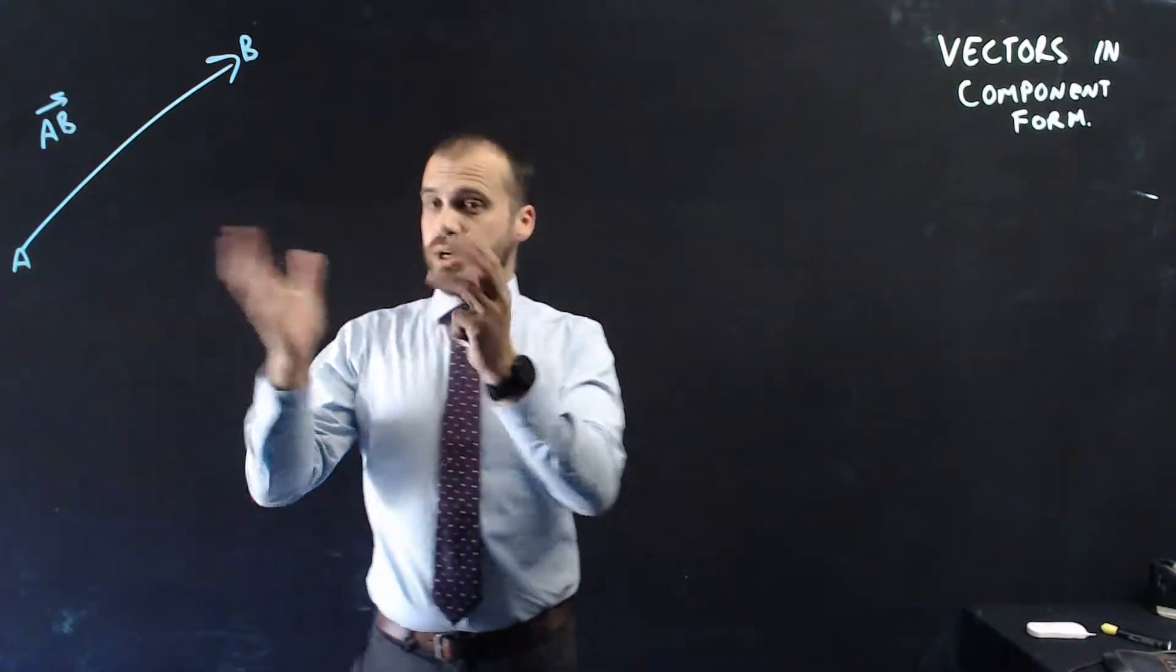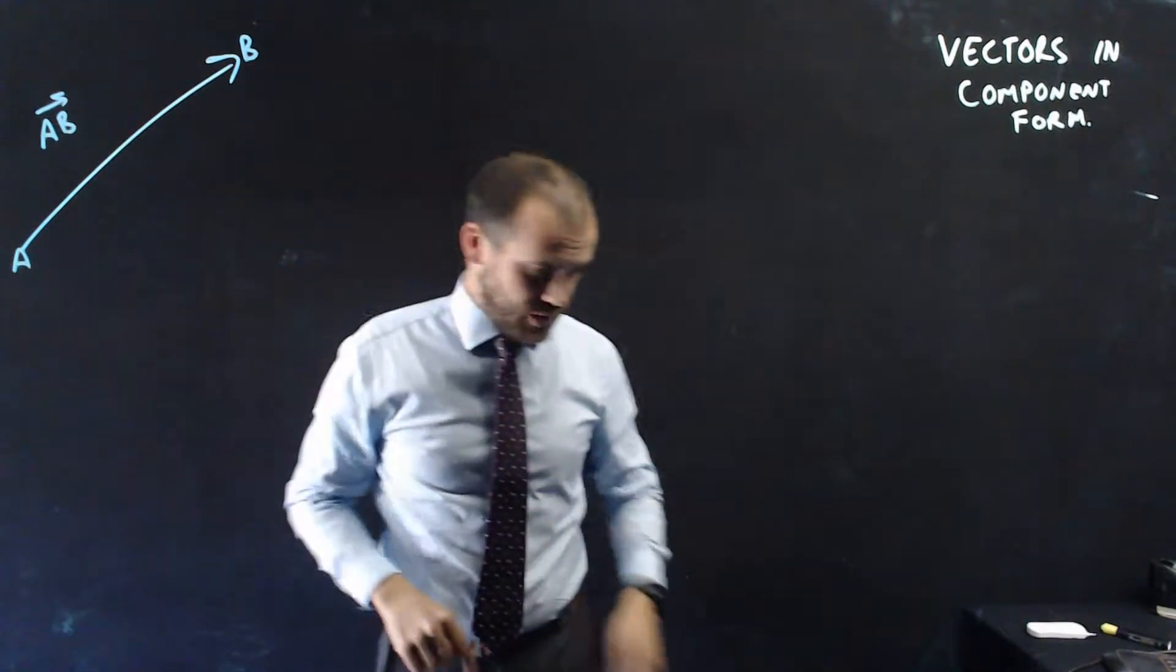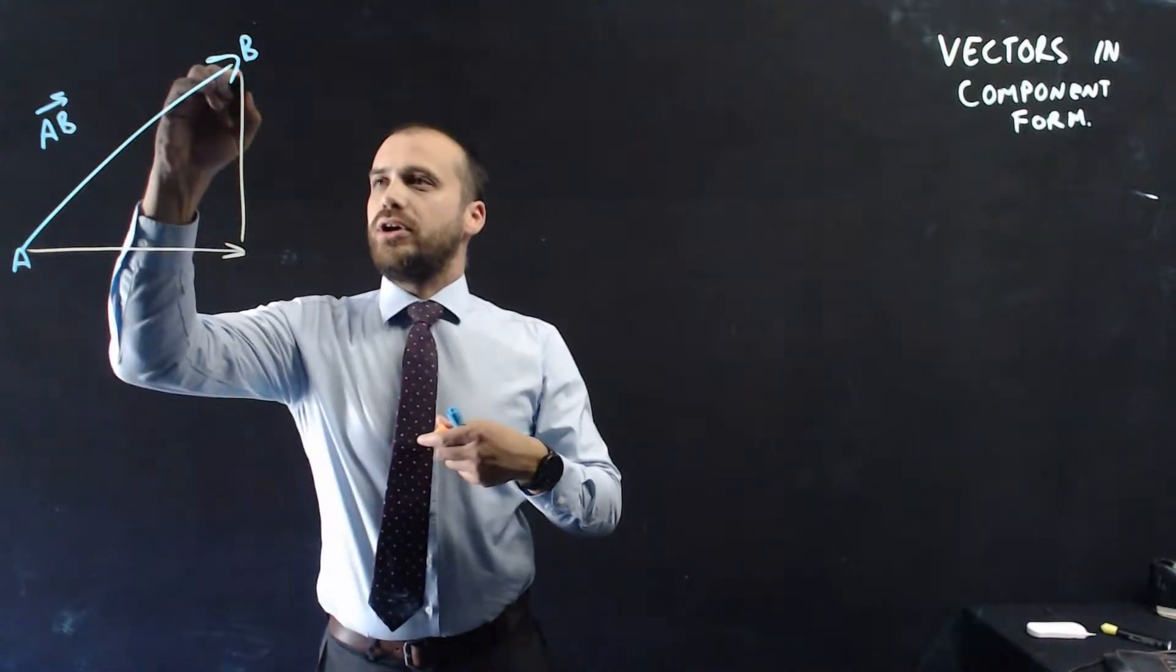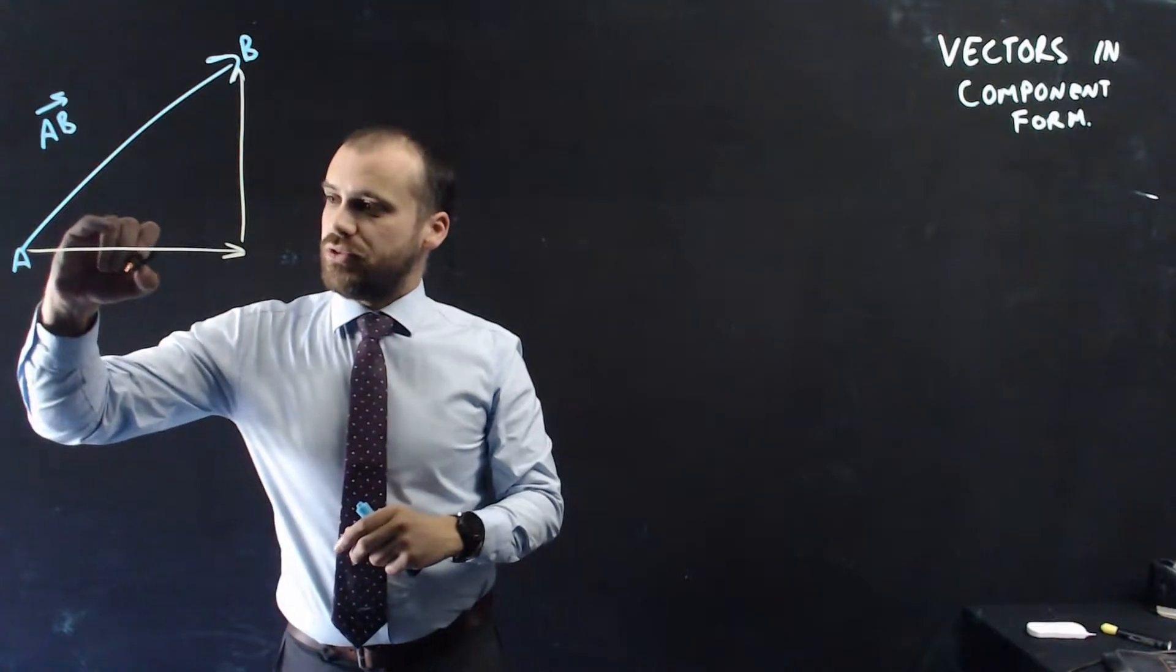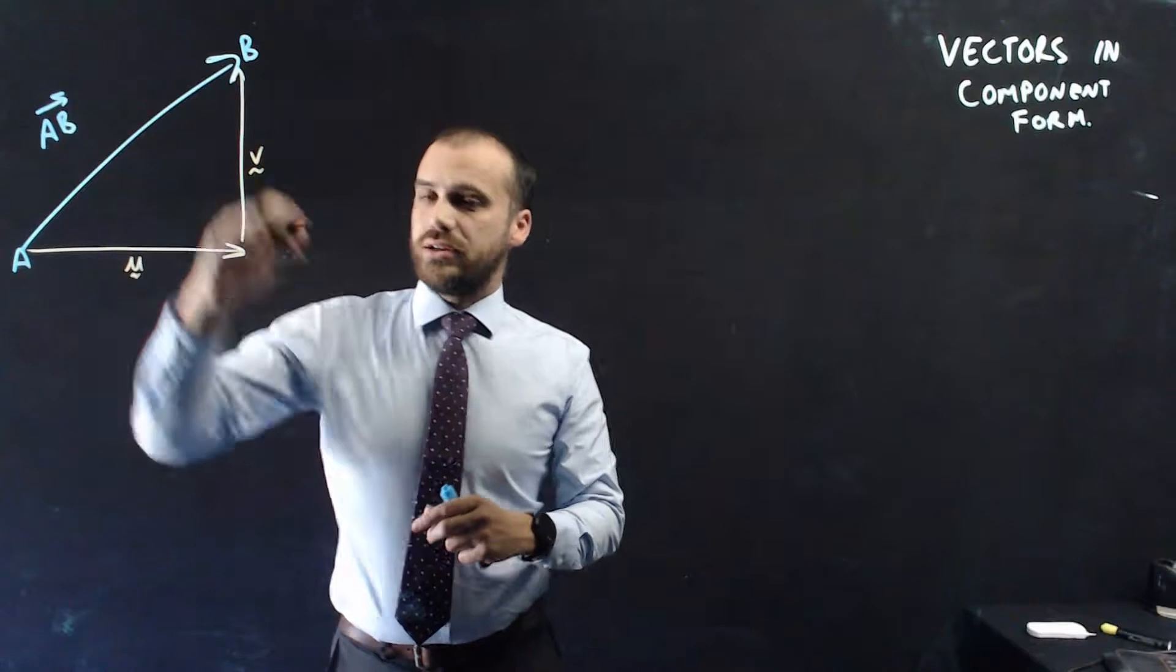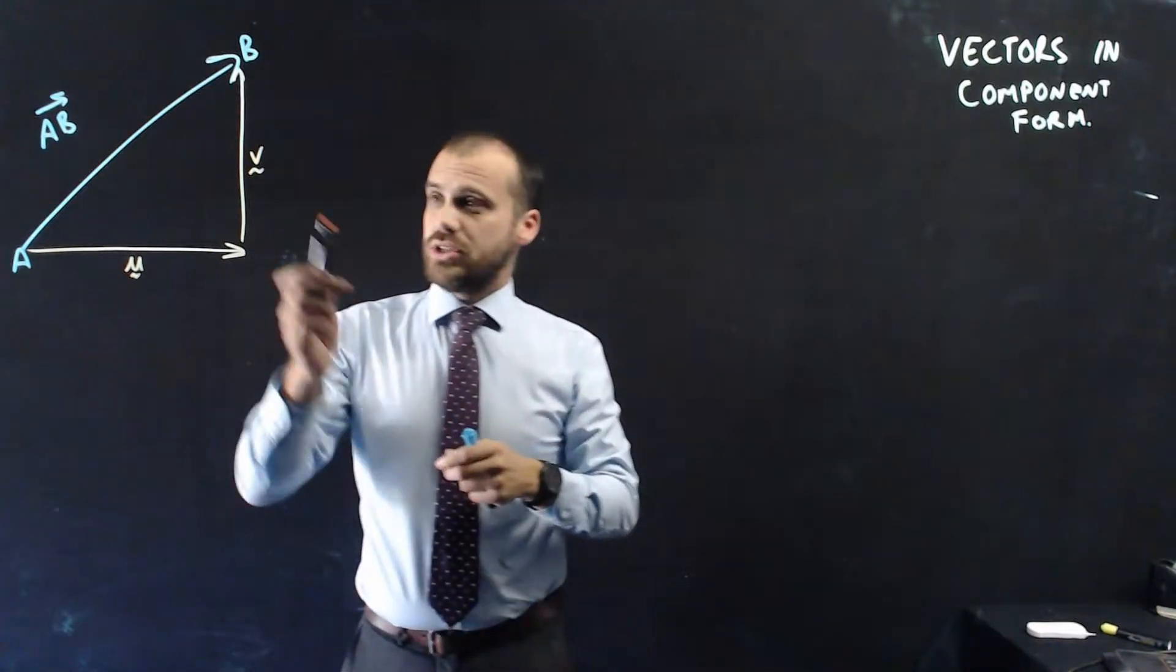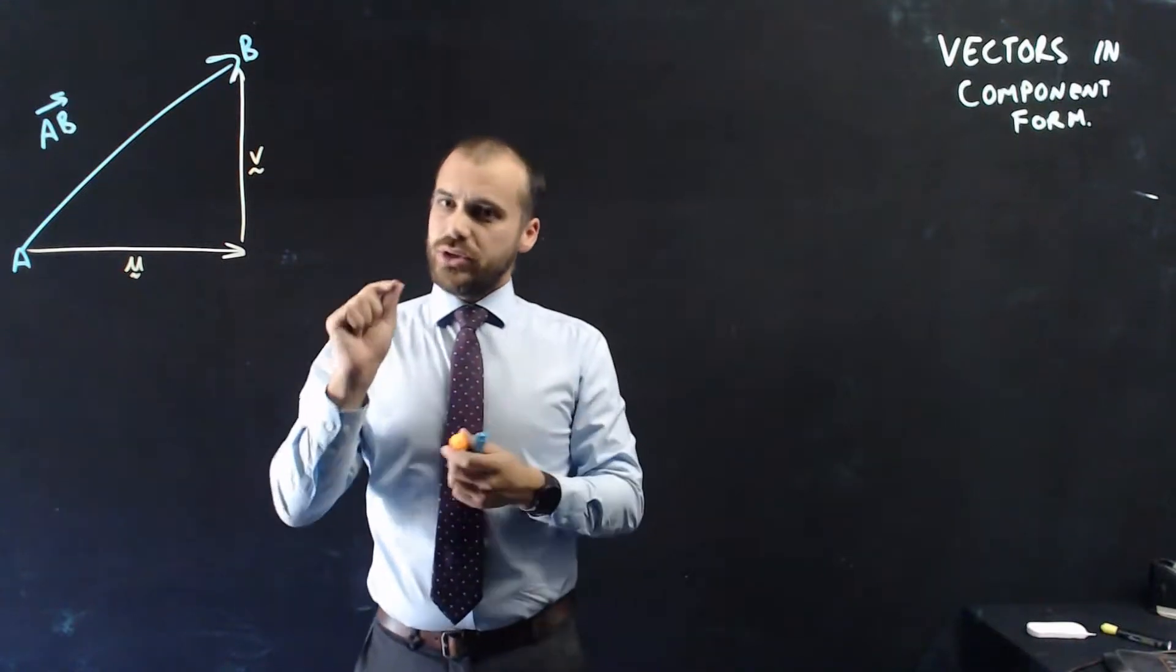Now, it would be useful to be able to talk about it in terms of like this direction and this direction. Because if I can draw in an arrow like that, and an arrow like that, we could say that vector AB is equal to whatever this vector happens to be, plus whatever that vector happens to be. And we can talk about this U vector being in the horizontal direction, and we talk about this V vector being in the vertical direction.